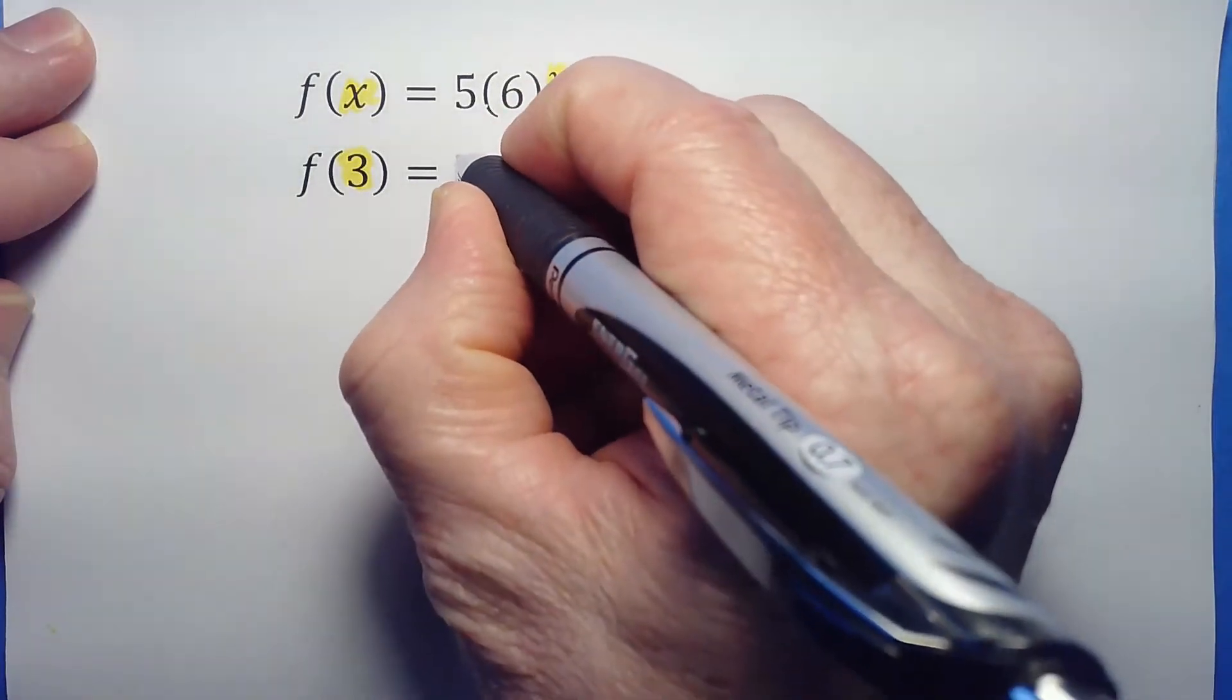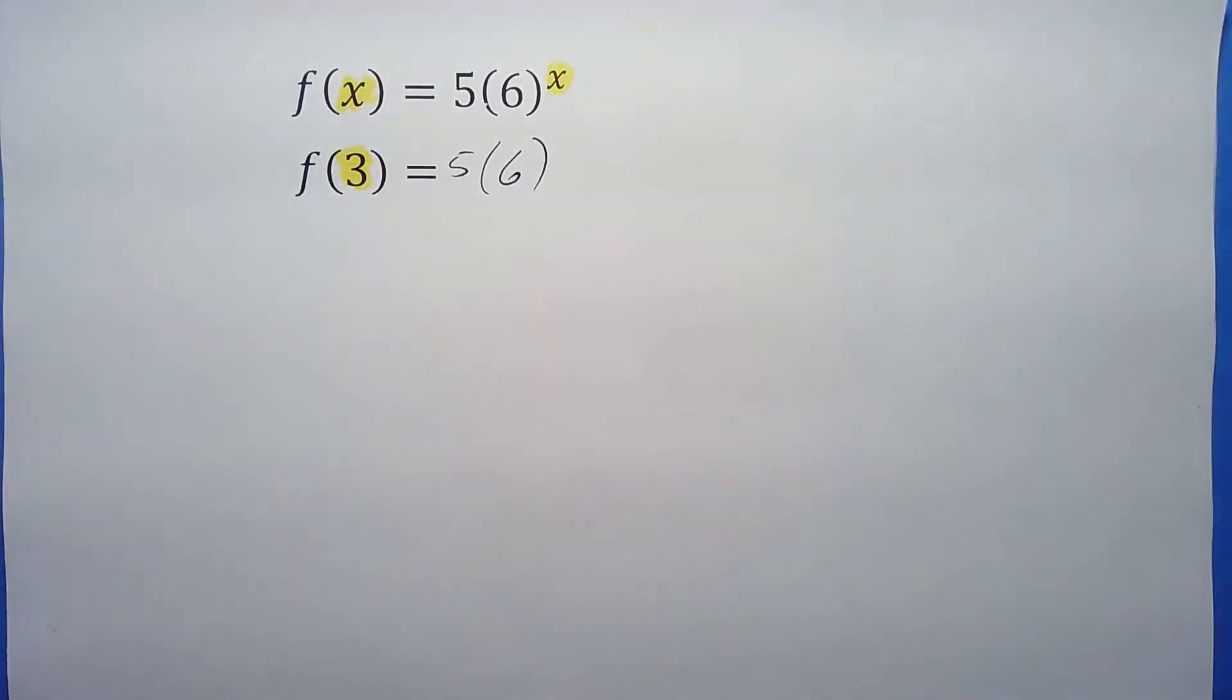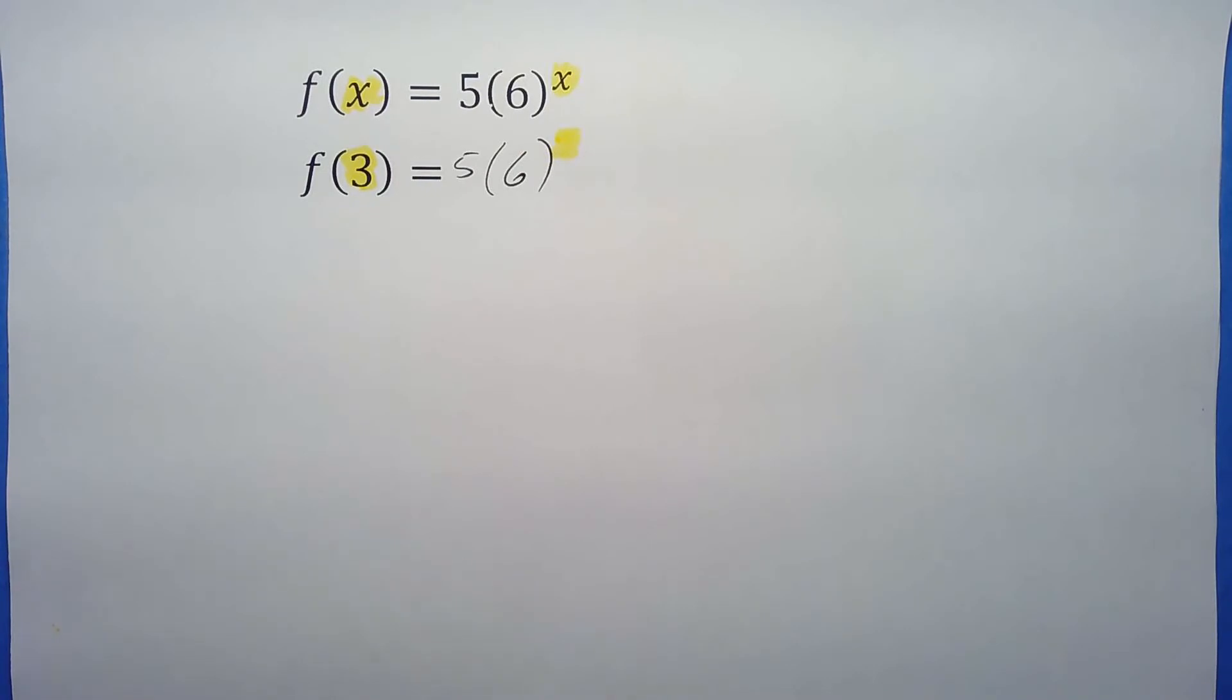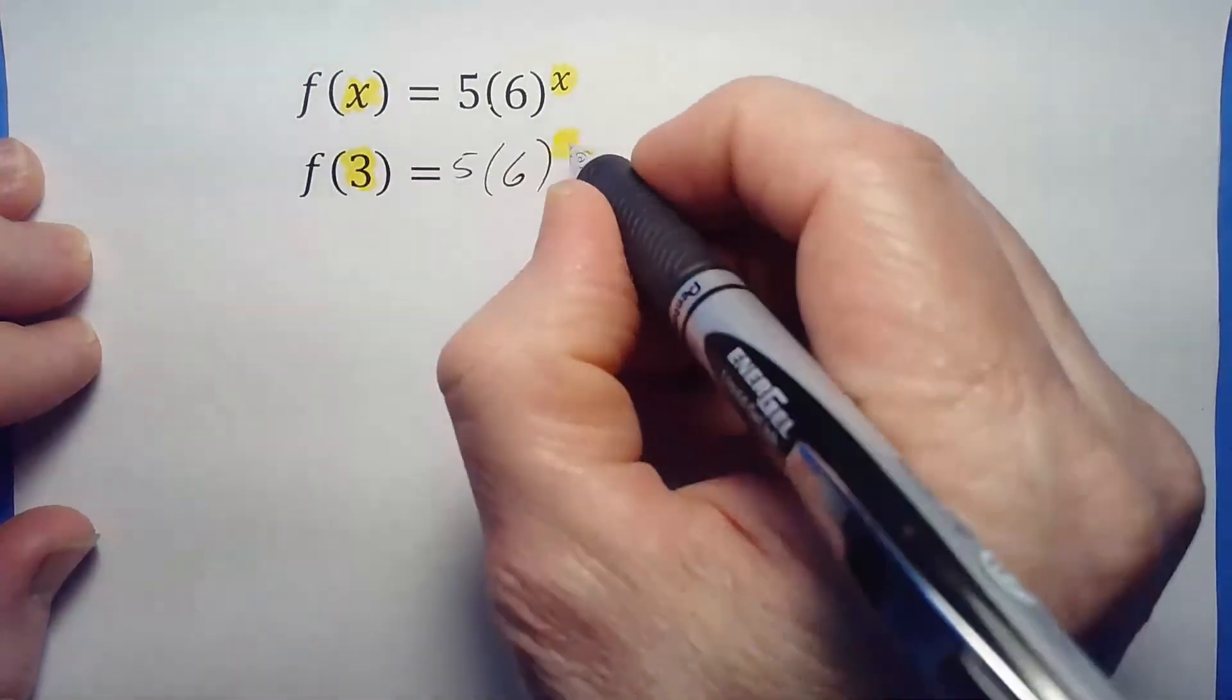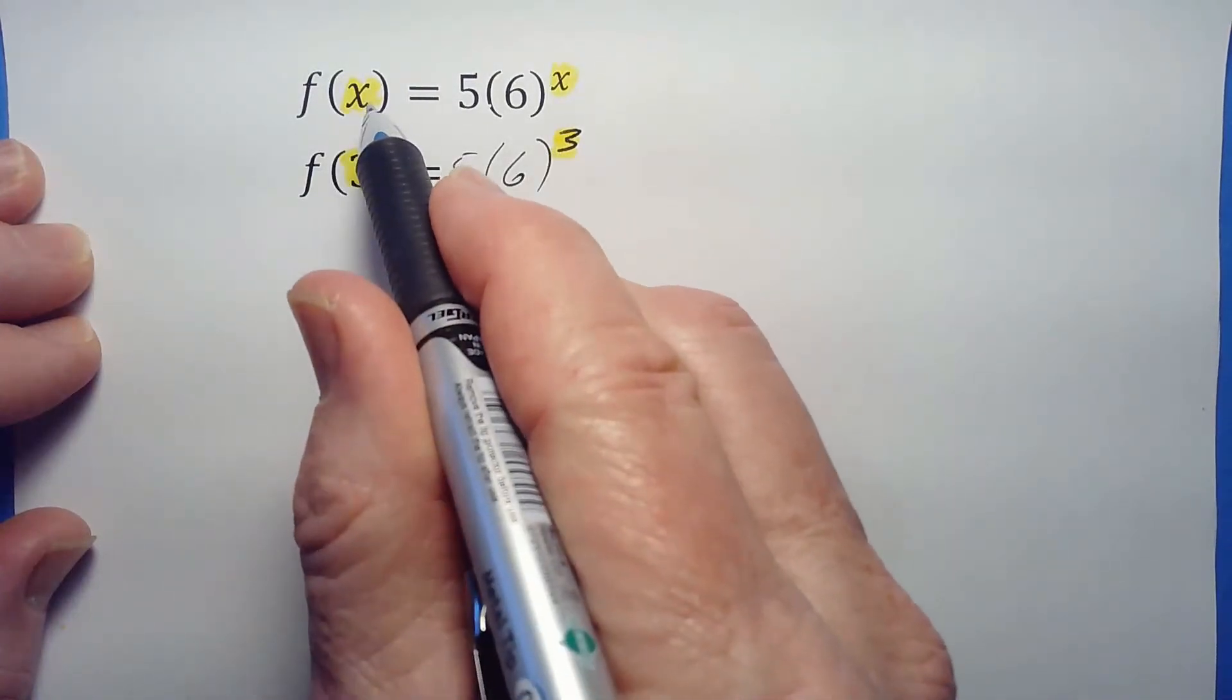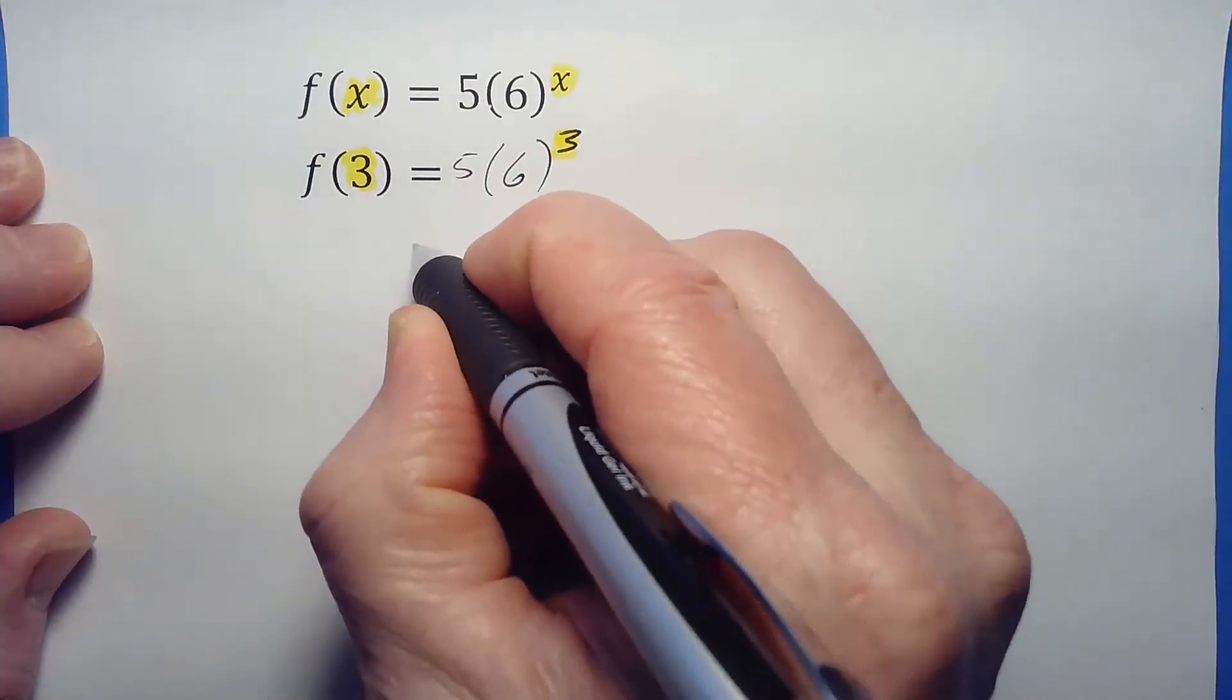We've got 5, and we've got this 6 as a base. Where there's this x here, we're going to put this 3. In other words, x and x, 3 and 3. We just have to work this out.